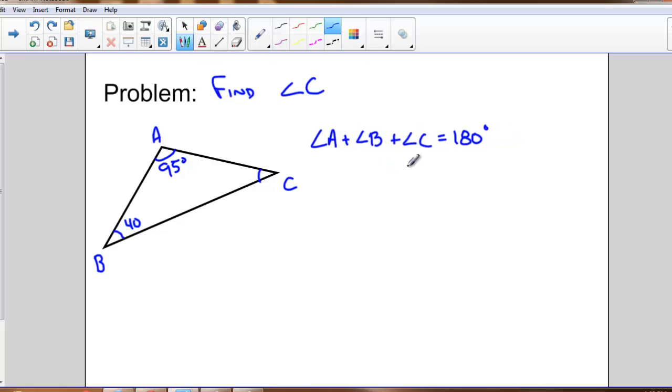If I rearrange this, angle C should equal 180 minus angle A minus angle B. Or angle C is equal to 180 degrees minus 95 minus 40. So angle C should equal, or does equal, 45 degrees.